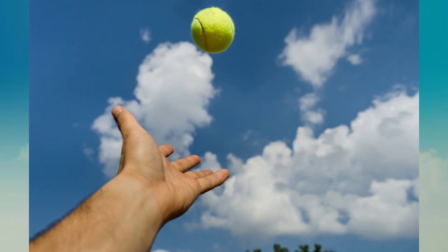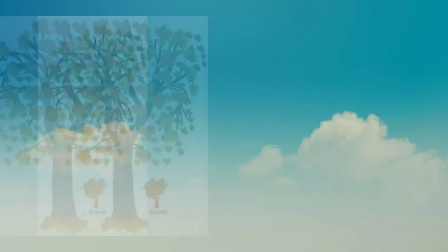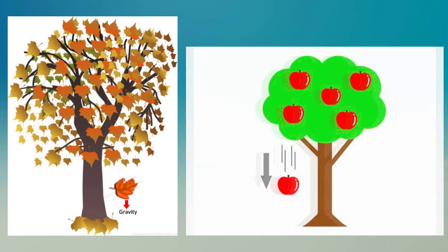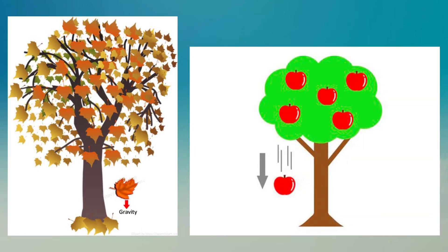As the ball moves up, it loses this force and then gravity pulls it down. Similarly, leaves and ripe fruits always fall on the ground due to the force of gravity, unless they are plucked.